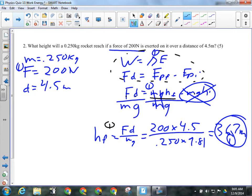And then maybe they went straight to plugging in the numbers. 200 times 4.5 over 0.250 times 9.81 gives us 367 meters. Everybody with me there? Make sure their answer has units on it. Give them a mark out of 10, let them see it, put it in the box.